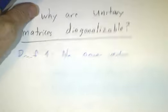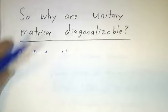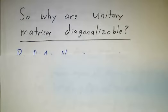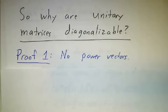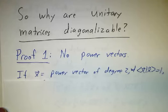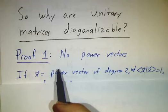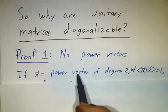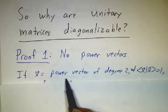So why are unitary matrices diagonalizable? Now remember we had three proofs of why Hermitian matrices are diagonalizable and there are analogous proofs for the unitary matrices. The first is that there's no such thing as power vectors or rather any power vector has to be an eigenvector. So if the matrix weren't diagonalizable, then you would have a basis of power vectors.